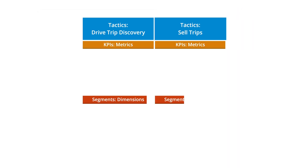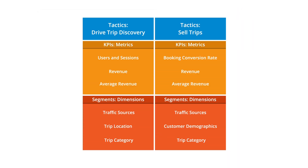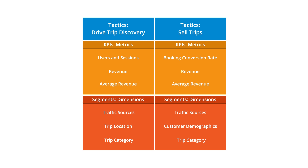For example, the Great Outdoors measurement plan requires tracking metrics such as users and sessions, revenue, the average value of visitors and trips purchased, and booking conversion rate. We'll also want to be able to analyze those metrics using different dimensions such as traffic sources, customer type, trip category, and trip location.